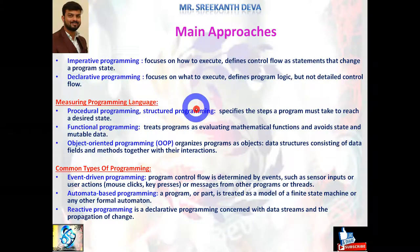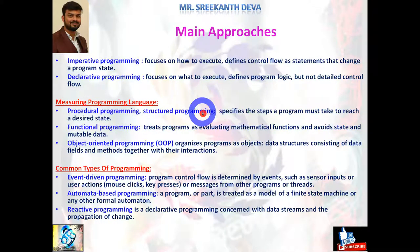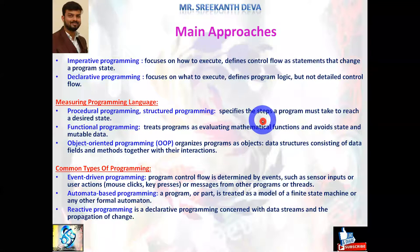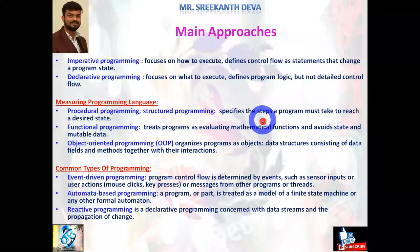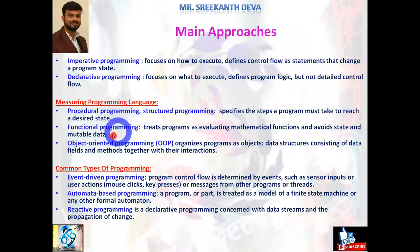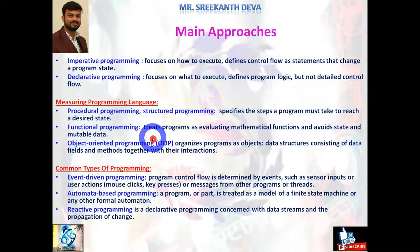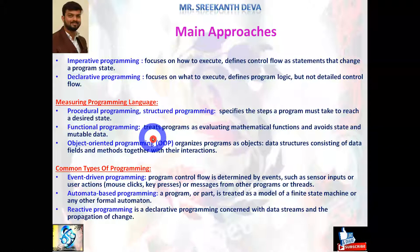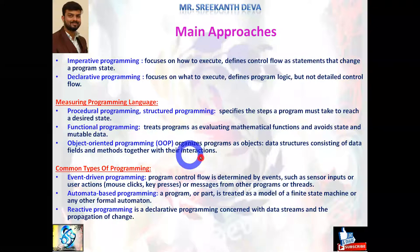Procedural programming specifies the steps a program must take to reach a desired state. Structural programming works in an algorithmic manner — step by step, providing a solution to a given problem. Functional programming reads the program as evaluating mathematical functions and avoids state and mutable data. Object oriented programming enables concepts like class, object, data abstraction, encapsulation, polymorphism, and inheritance, providing higher-level concepts comparatively.